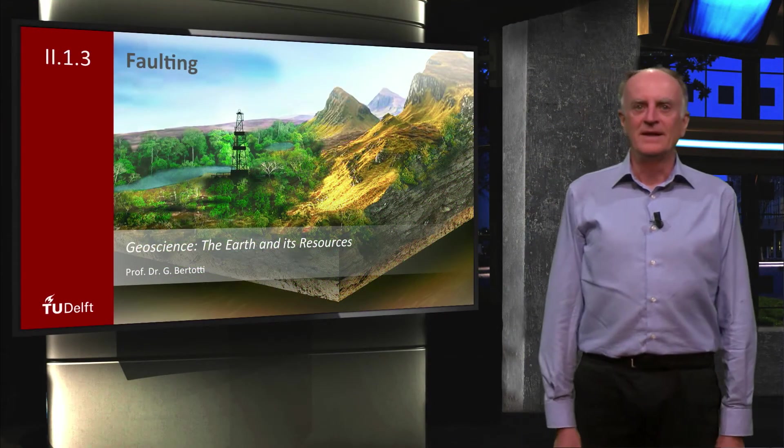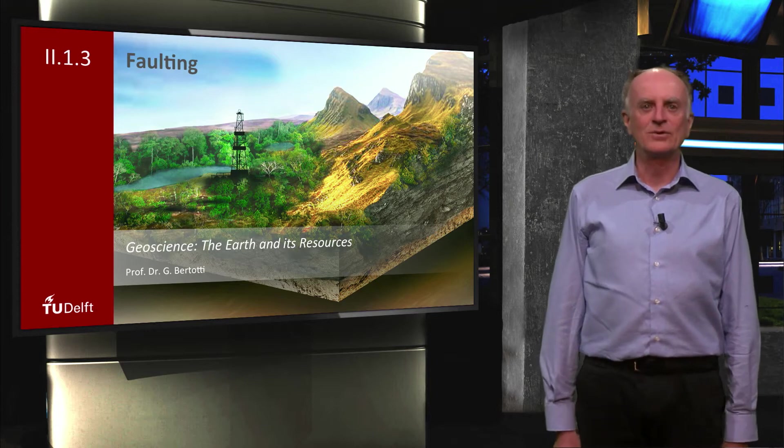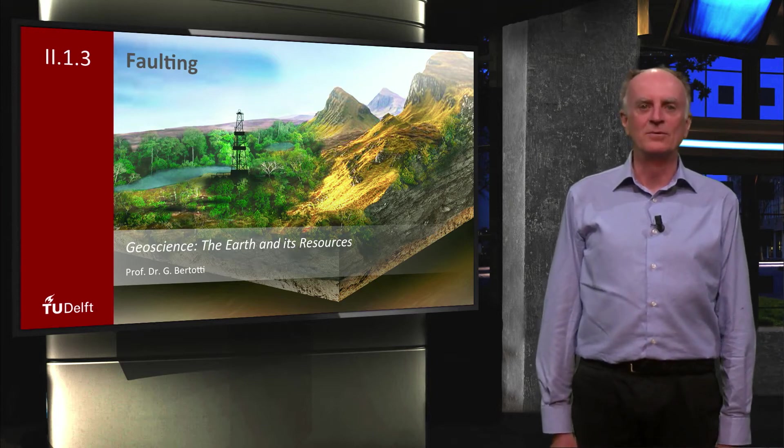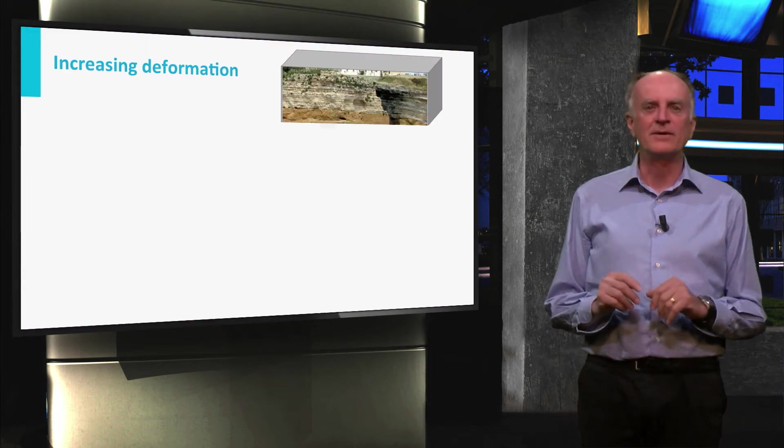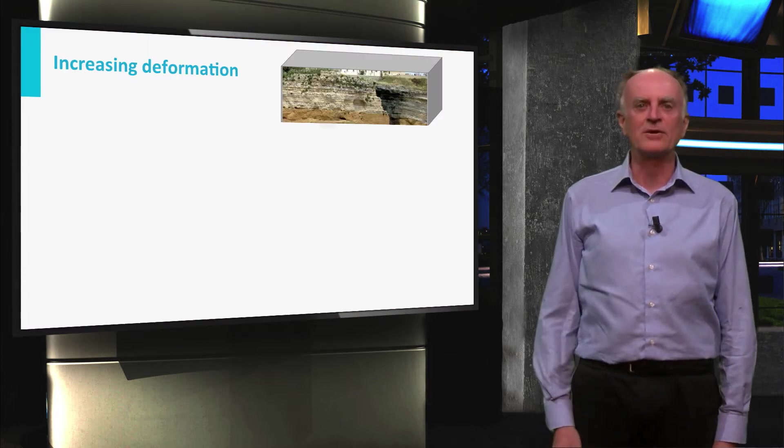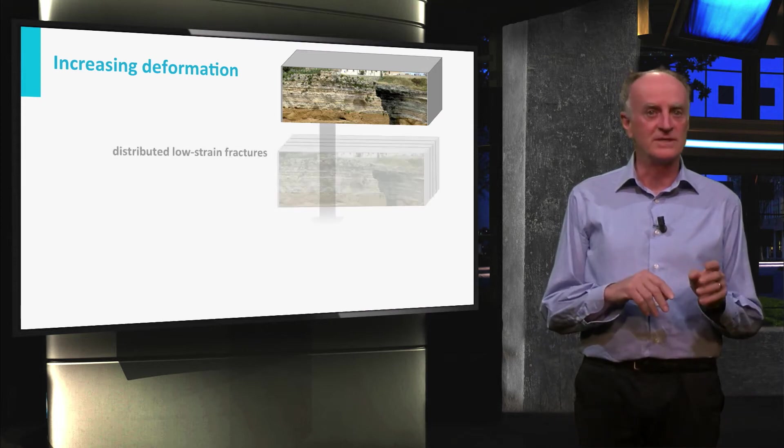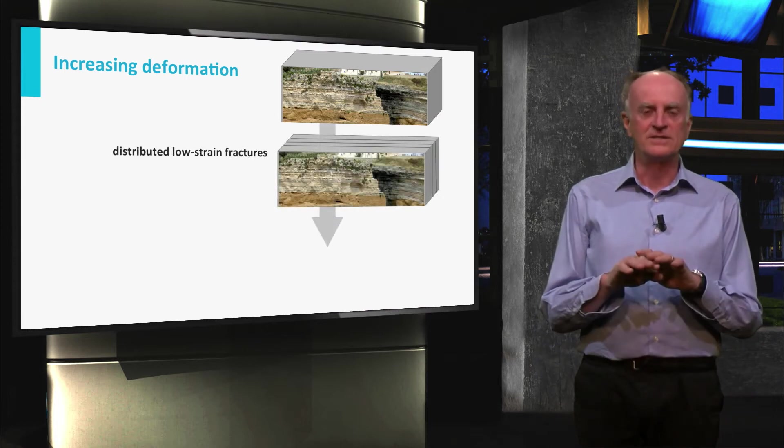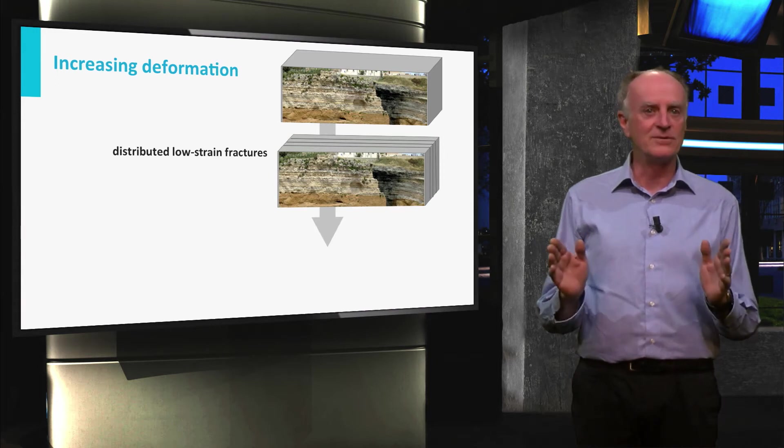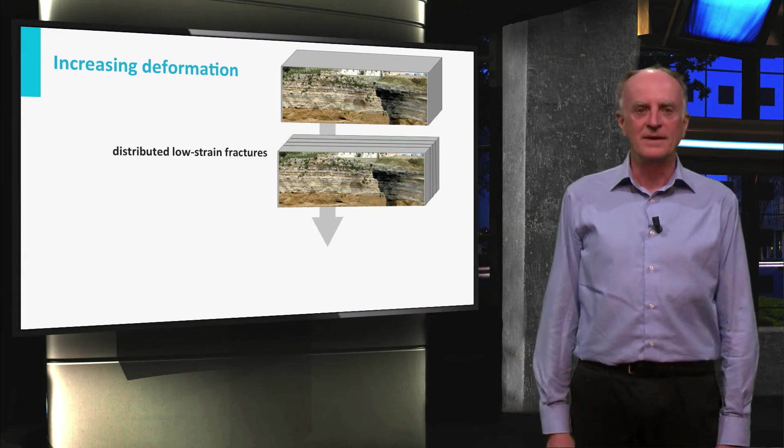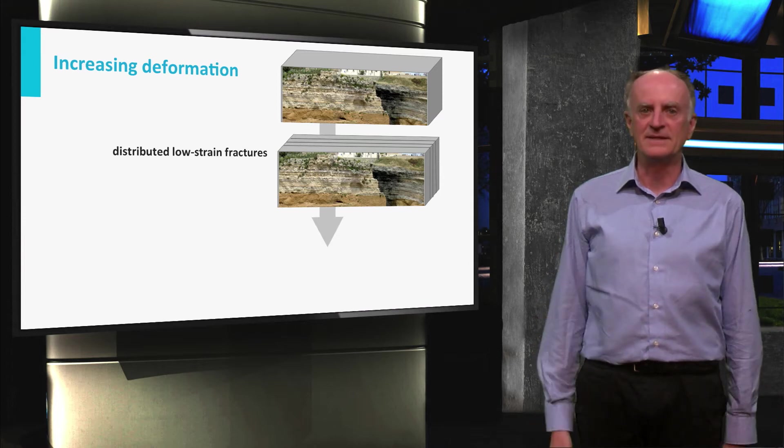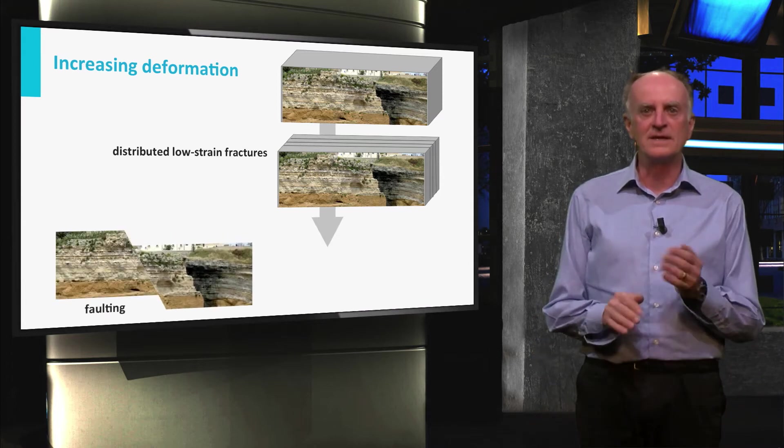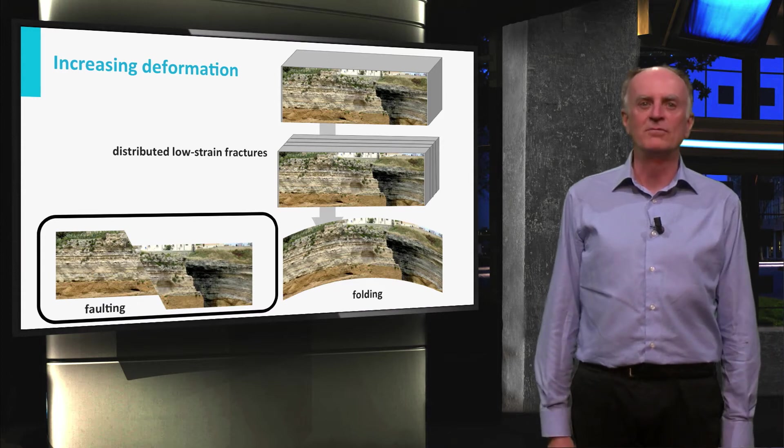Welcome. In the previous clip we started looking at how rocks deform in the low temperature regime. We have seen that the first 5-10% of length changes are generally accommodated by a large number of structures, joints and/or stylolites distributed over the entire body, absorbing little overall strain. With increasing strain, the rock must adopt different ways to accommodate deformation and will develop mechanical instabilities. These are faults and folds. Today we focus on faults.